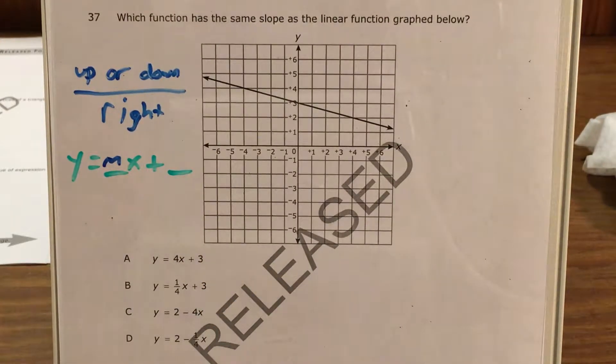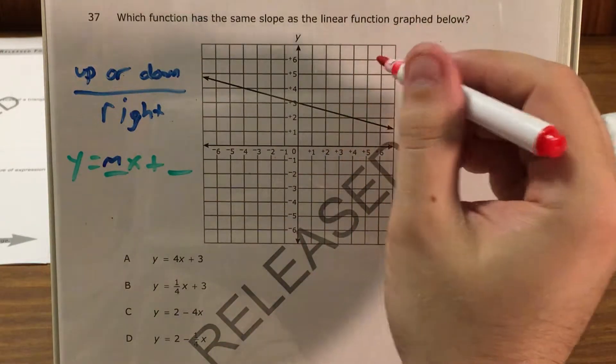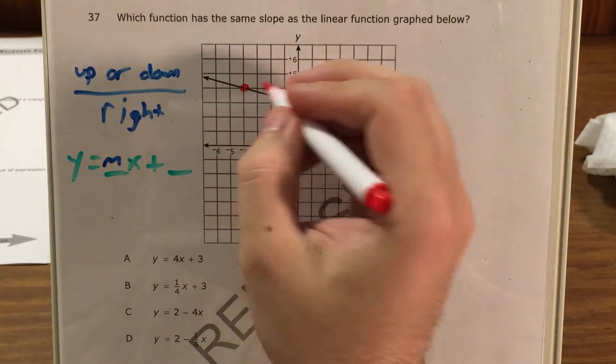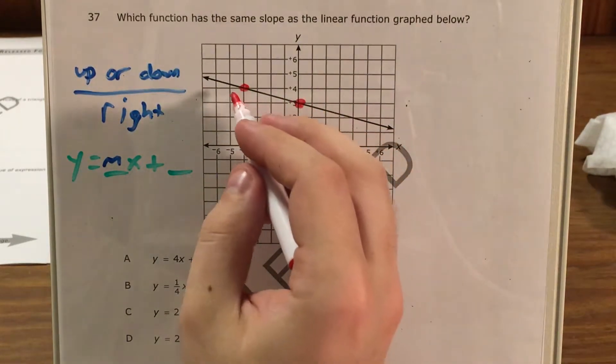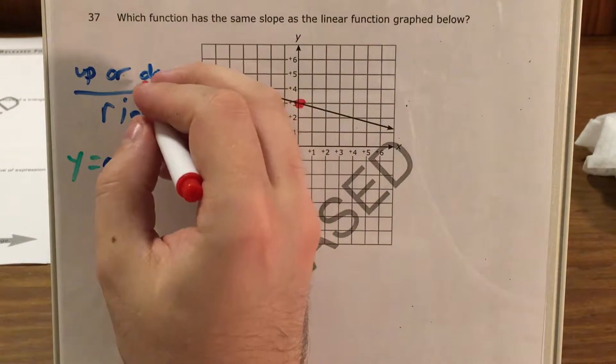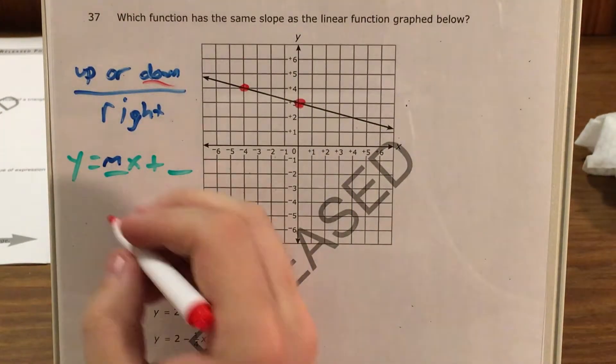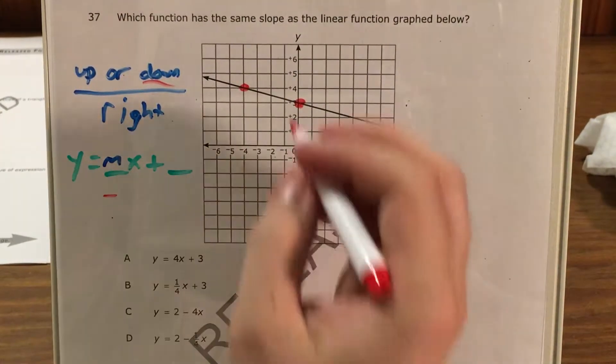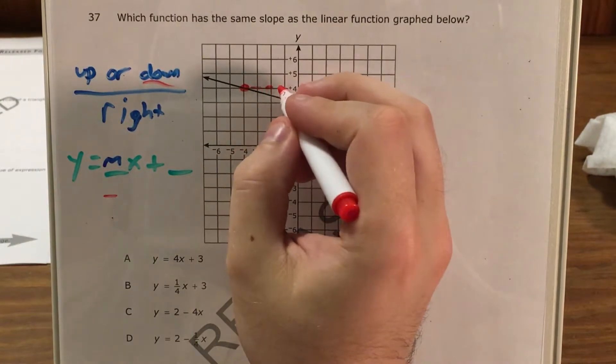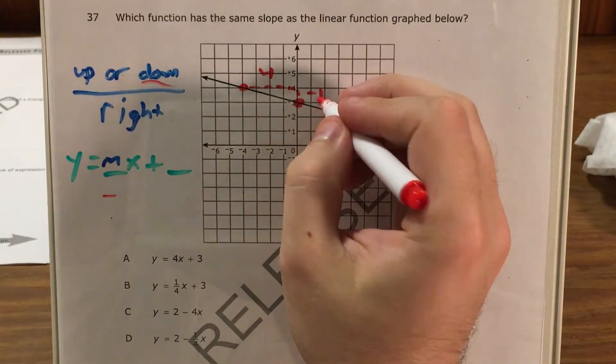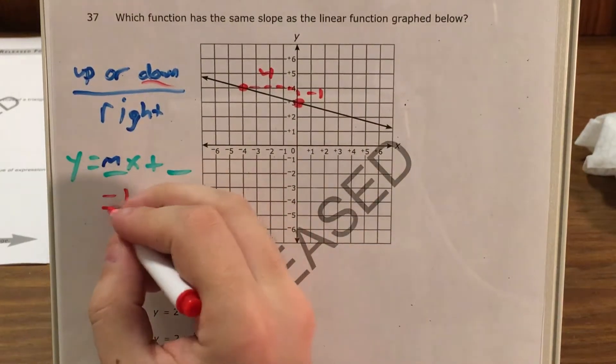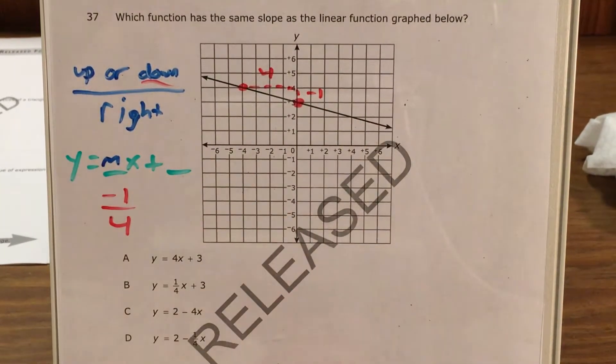Alright so let's go ahead and pick a couple points and try to count up our slopes. That's a good one and that's a good one. So from here I can already see that as I'm going right I'm going down, which means my slope is going to be negative. And now I can see that I'm going right four and down one. So my slope is actually going to be negative one fourth.